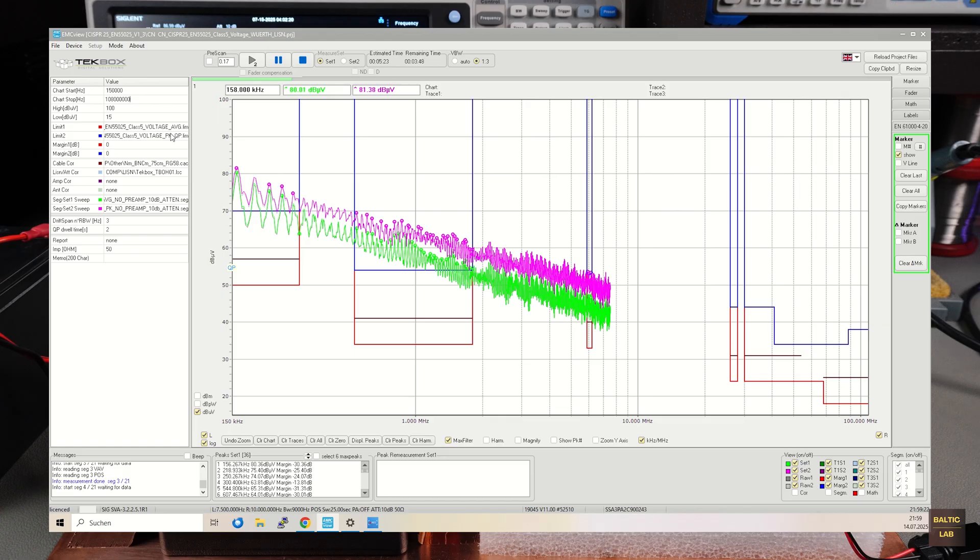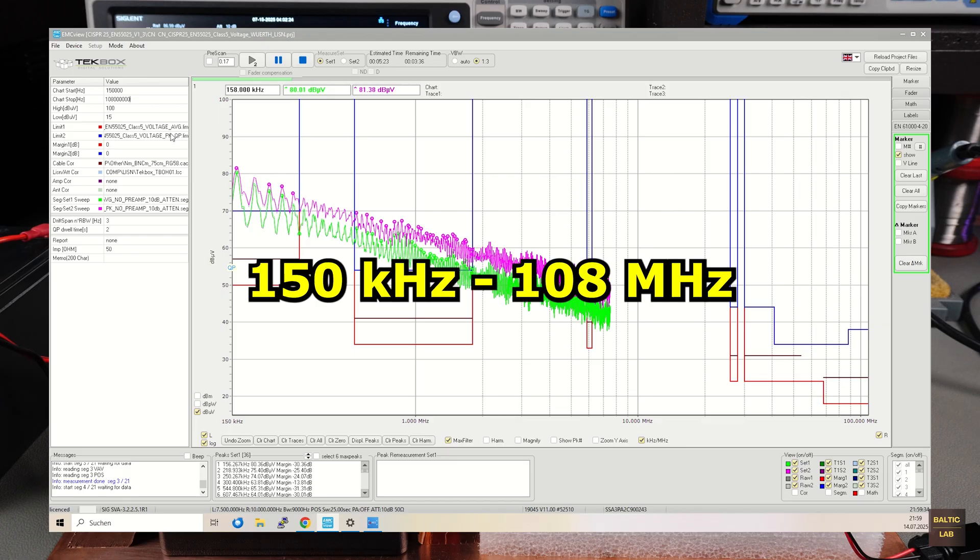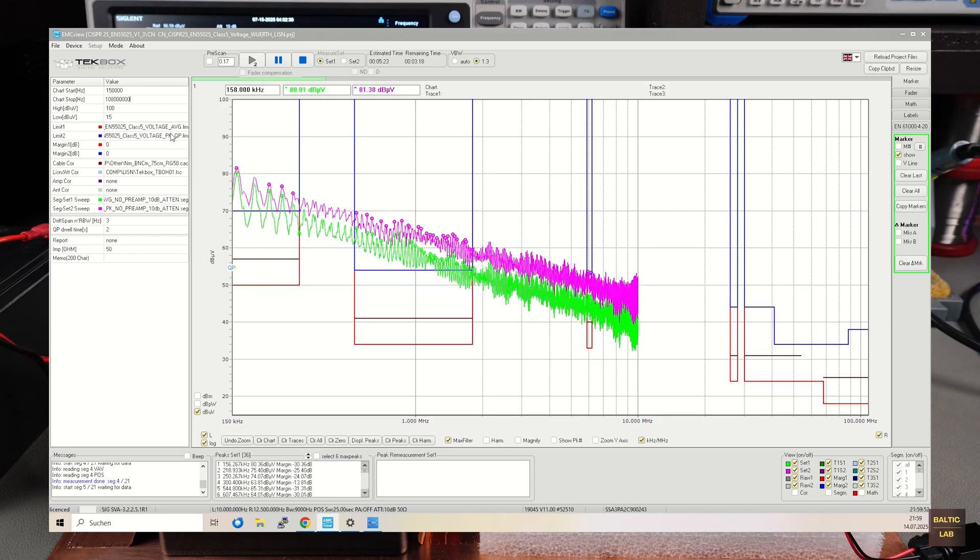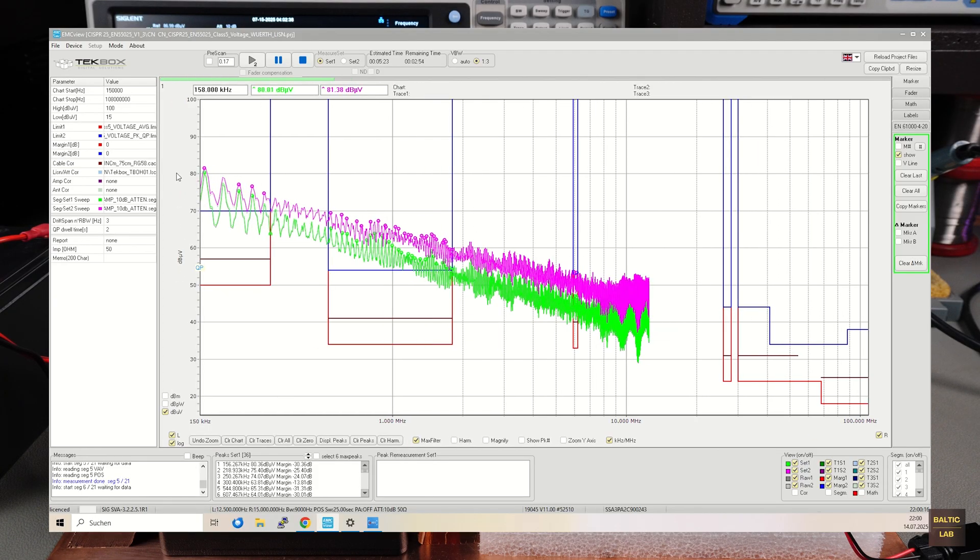The measurement range spans from 150 kHz to 108 MHz. The blue and red lines represent the maximum permissible CISPR25 limits. The blue lines indicate the peak value limits, and the red lines show the maximum allowable average values of the interference. For EMC compliance, both limits must be met. If either the peak or average limit is exceeded at any point, the device fails the test. So this buck converter has already failed.